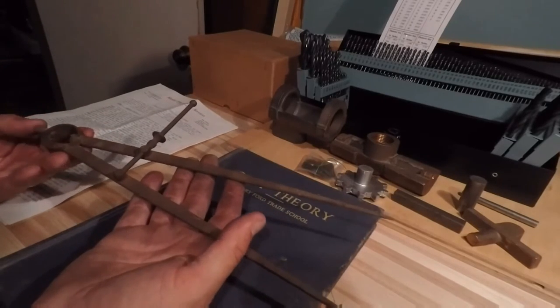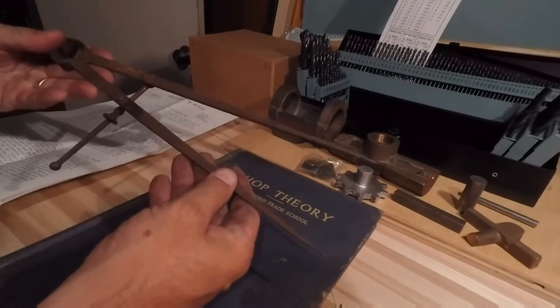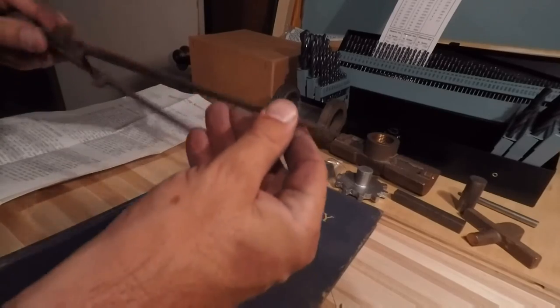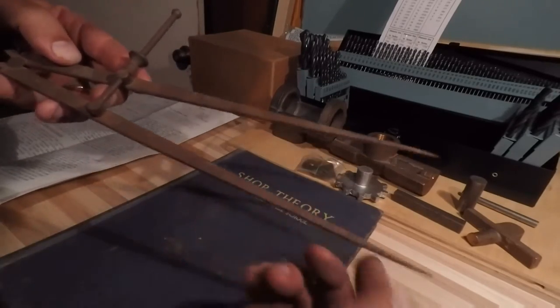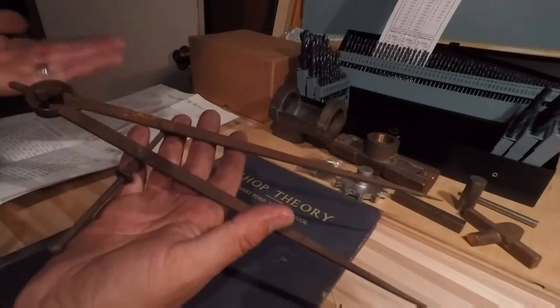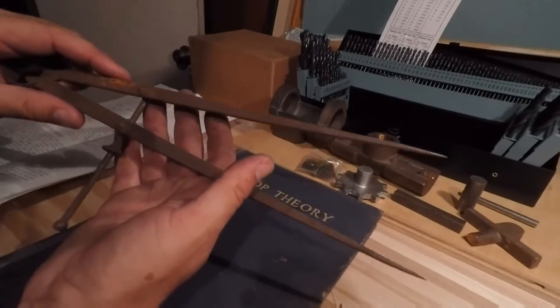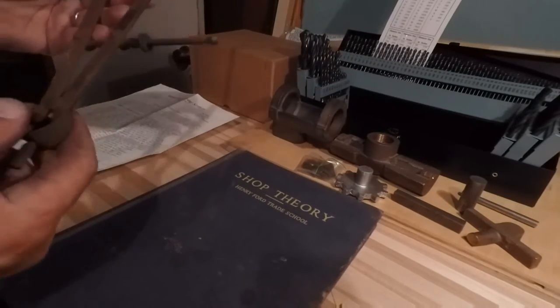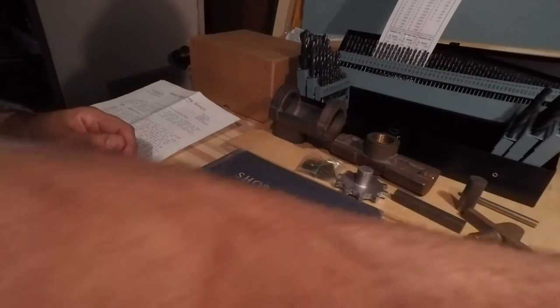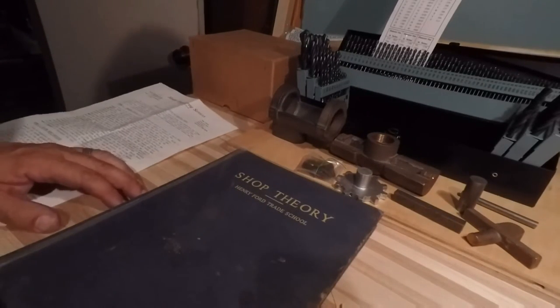bunch of assorted odds and ends that were all marked a dollar. I saw these and I mean, those are really nice big set of dividers. Draw a big arc with that, right? And sure enough, these are Starrett tools. So hey, when can you buy a Starrett tool for a dollar? I mean, believe me, if you went to go buy one of these for a dollar now, they'd just laugh at you.